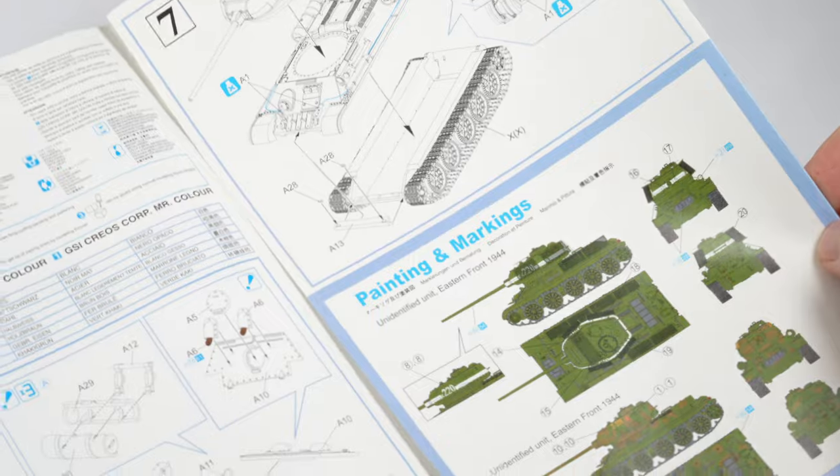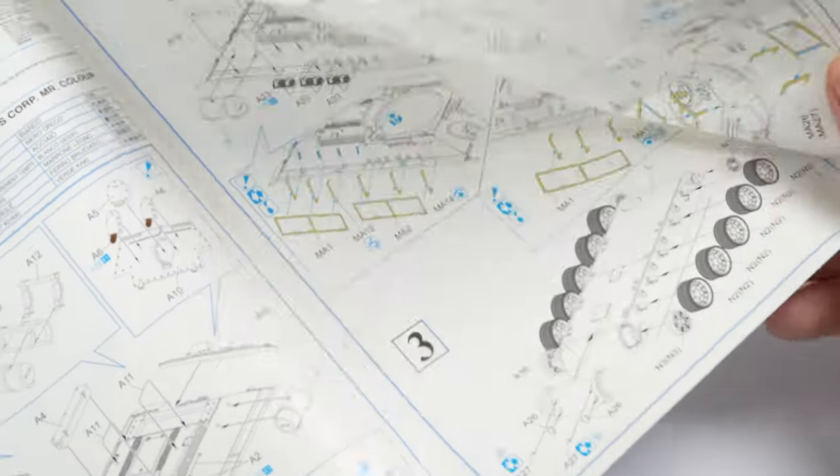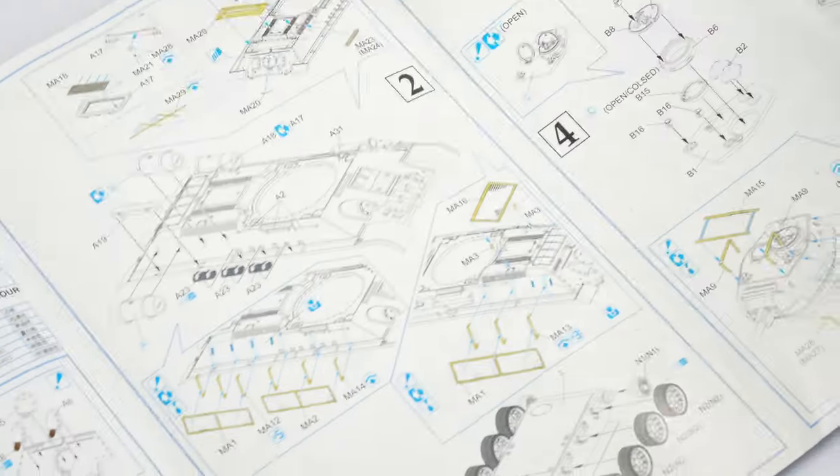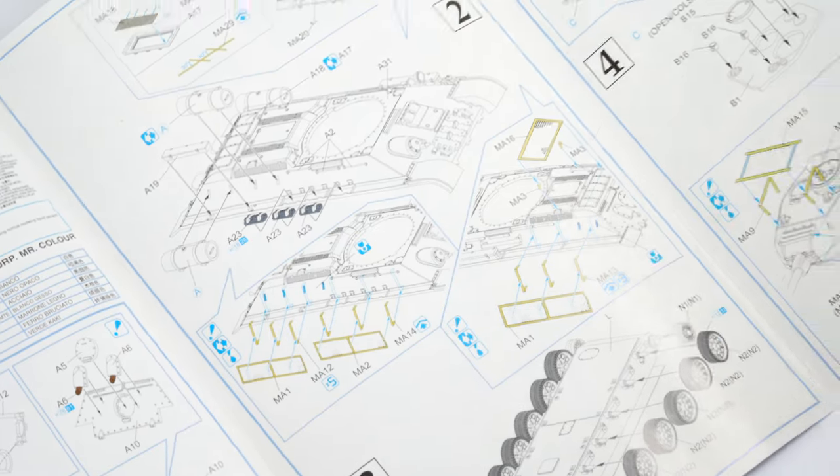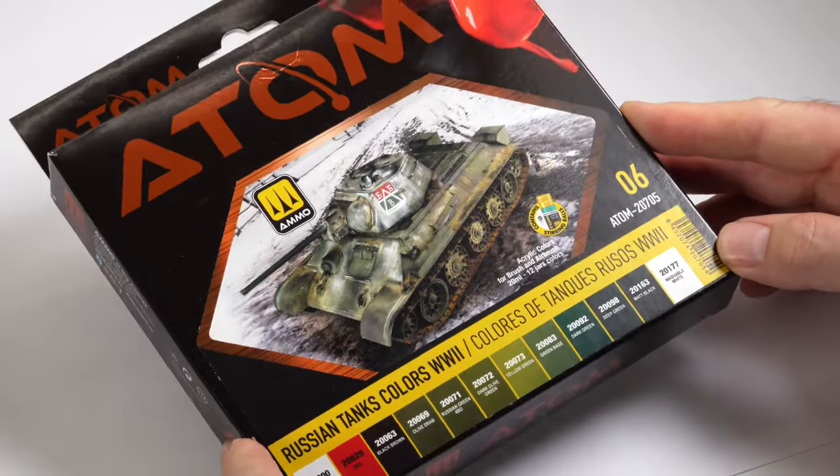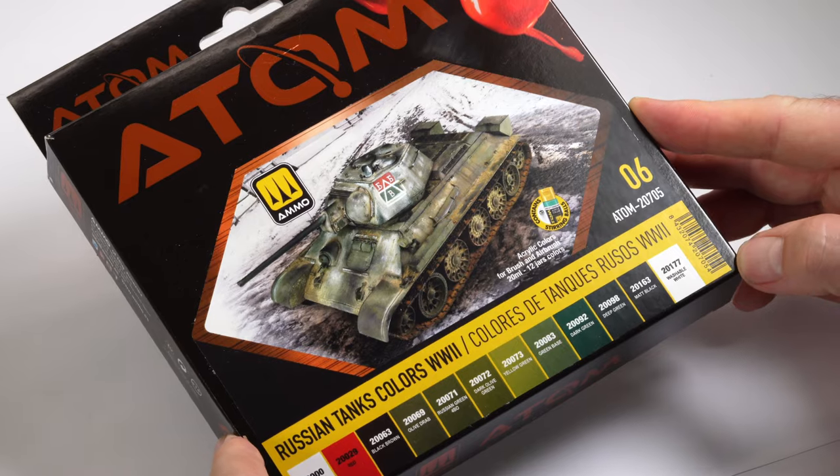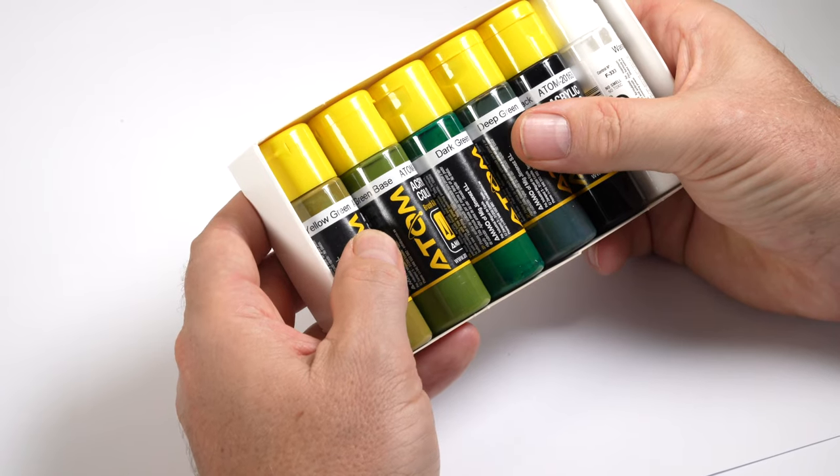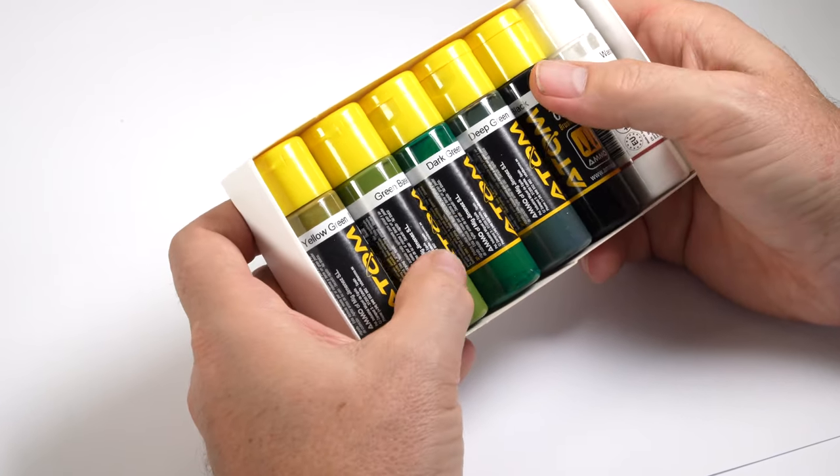The kit seemed to be a reasonably straightforward build, so I'll try and move swiftly through the construction phases and get to the good stuff for you. I'd been given a set of Russian colors from the new range of Atom paints by Ammo, and I wanted to trial them on a model, so this subject seemed to perfectly fit the bill.